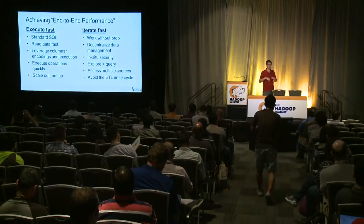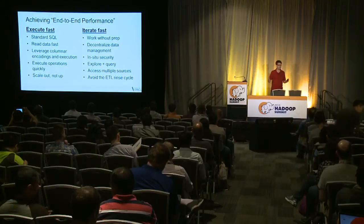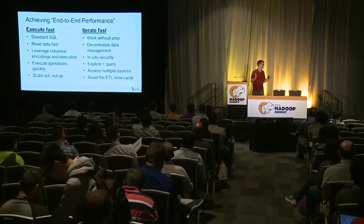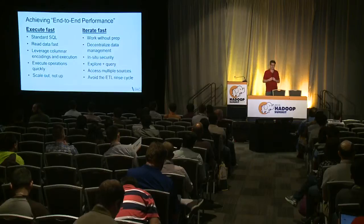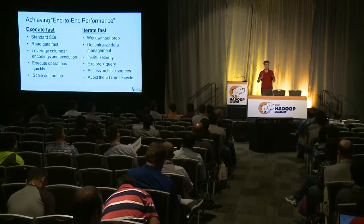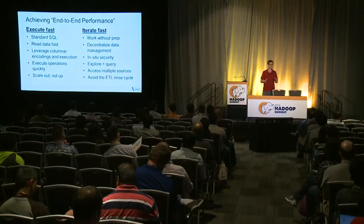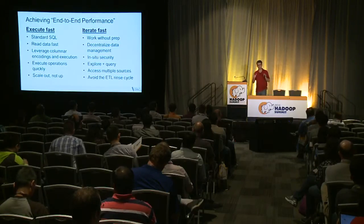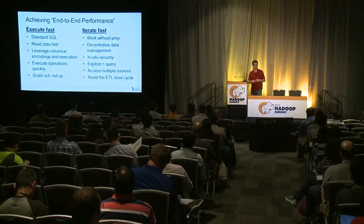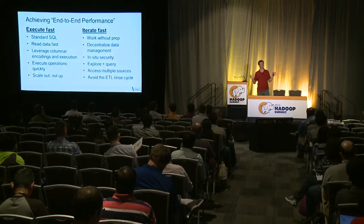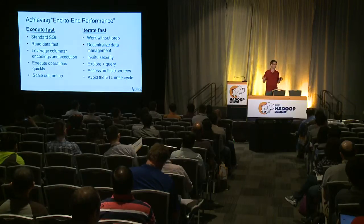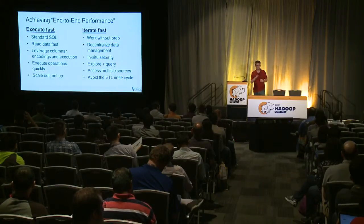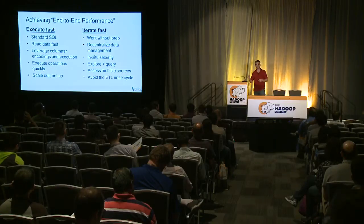At the core of Drill, we wanted to achieve complete end-to-end performance. That starts with reading data off disk fast, doing operations in memory fast, avoiding spooling to disk unless absolutely necessary, and scaling out. Drill does that extraordinarily well. Benchmarks coming out very shortly will show how fast Drill can be. The best way to understand a system is to try it on your own use case. Drill is faster than all the Java engines that exist today and faster than or at least competitive with most C engines.